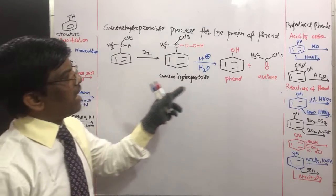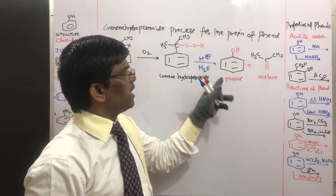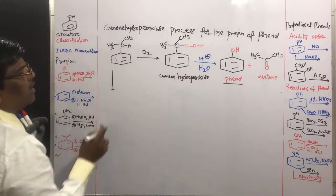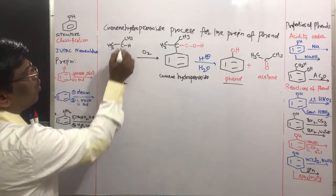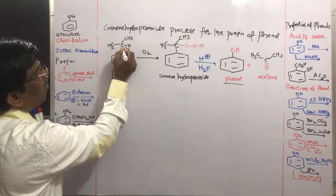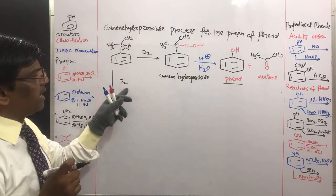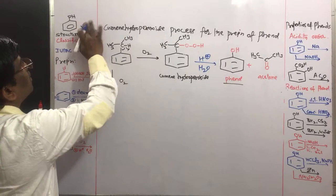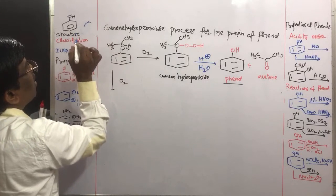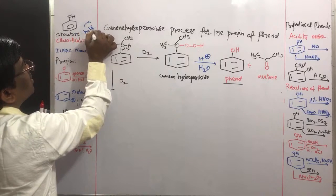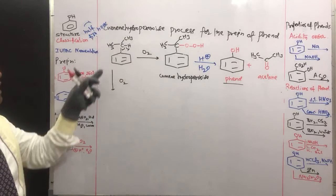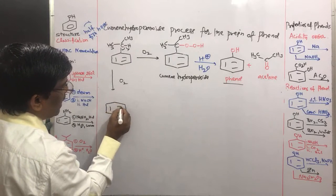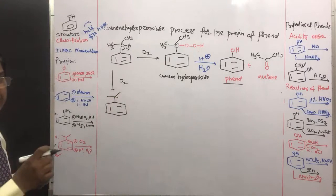Cumene hydroperoxide undergoes a rearrangement reaction in the presence of water and acid to give phenol. Let us see the mechanism. In the first step, cumene in the presence of oxygen loses a hydrogen free radical — generation of a free radical takes place under aerial oxidation. The arrow for a free radical step should be written as a half-headed (fish-hook) arrow.